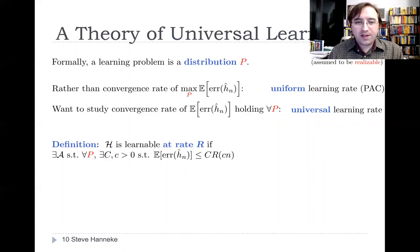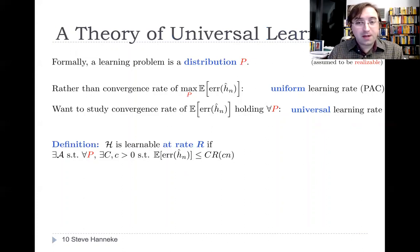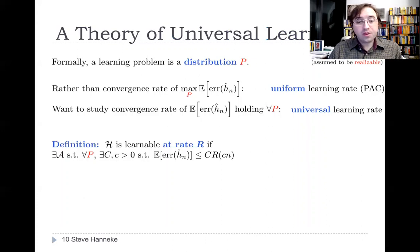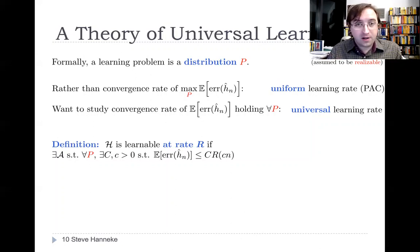These observations lead to a distinction between two types of convergence: uniform versus universal. To formalize this, recall that a learning problem is a distribution P. While a uniform rate studies the convergence rate of the max expected error rate, here we'll study what rate the expected error converges at for all distributions P — replacing a max with a for all. Formally, we say a concept class H is learnable at rate r if there is an algorithm such that for all realizable distributions, there exist constants — which may depend on the distribution — such that the expected error rate is bounded by a constant times r of a constant times the sample size.